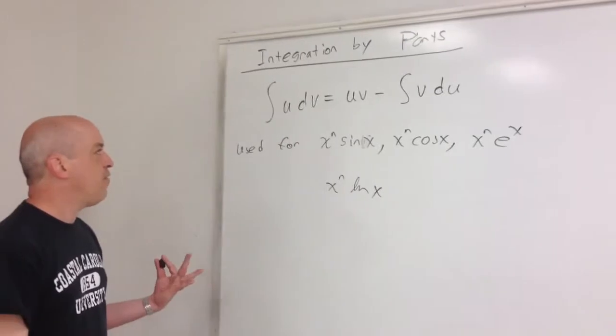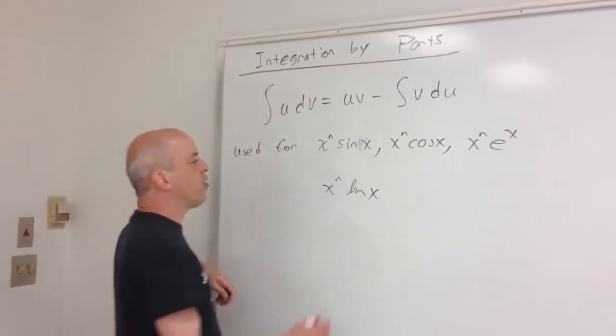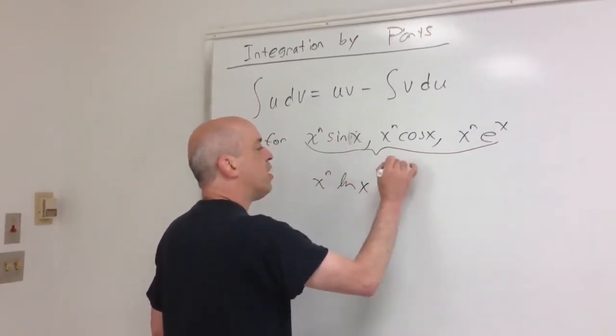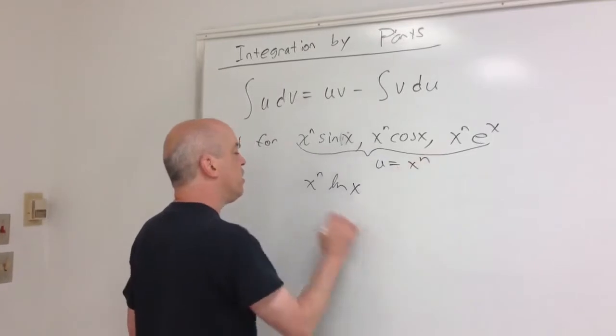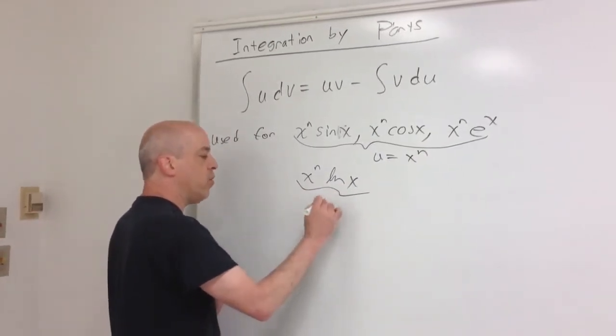Now the first thing that you have to do to use this formula is decide what to call u and what to call dv. So I've broken this up into two cases. In these three, we're going to want to let u equal x to the n, and in this case, as it turns out, we're going to want to let u equal the natural log.